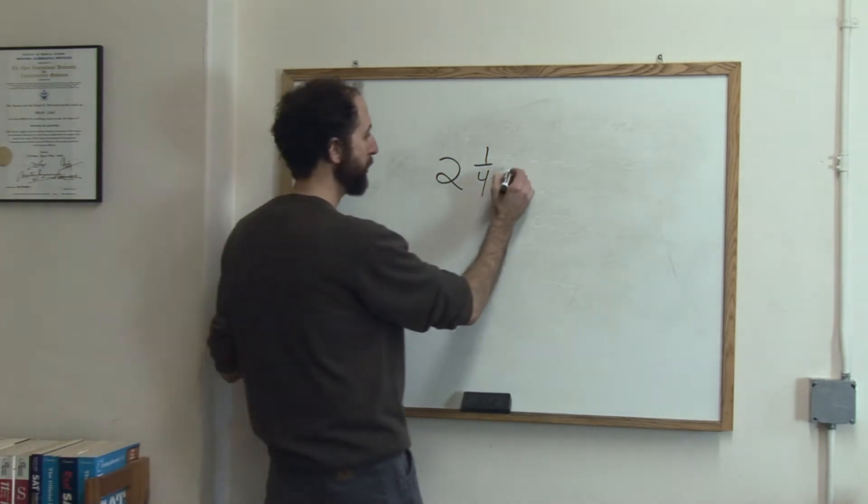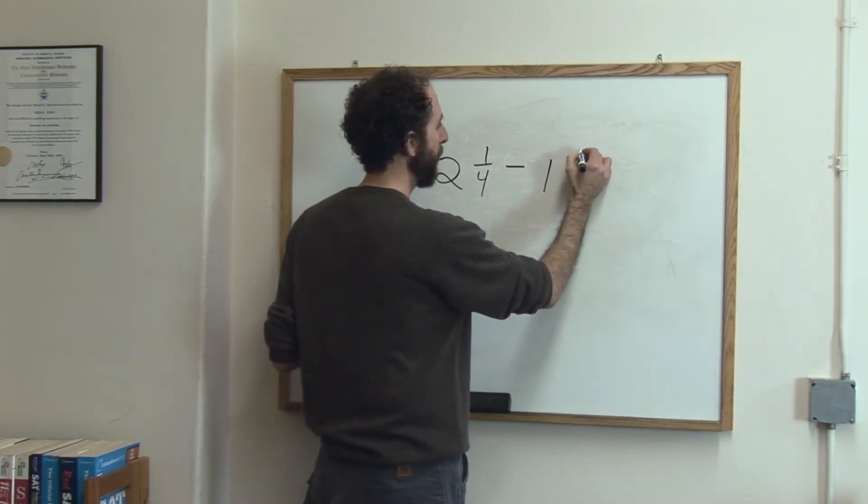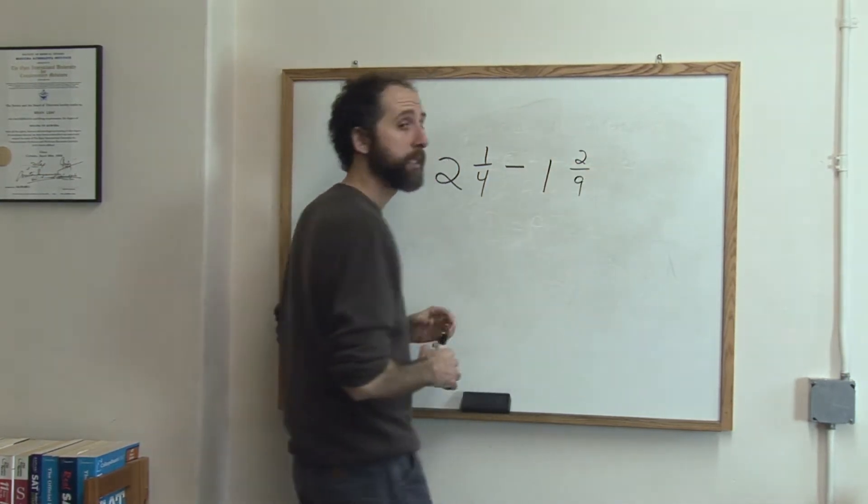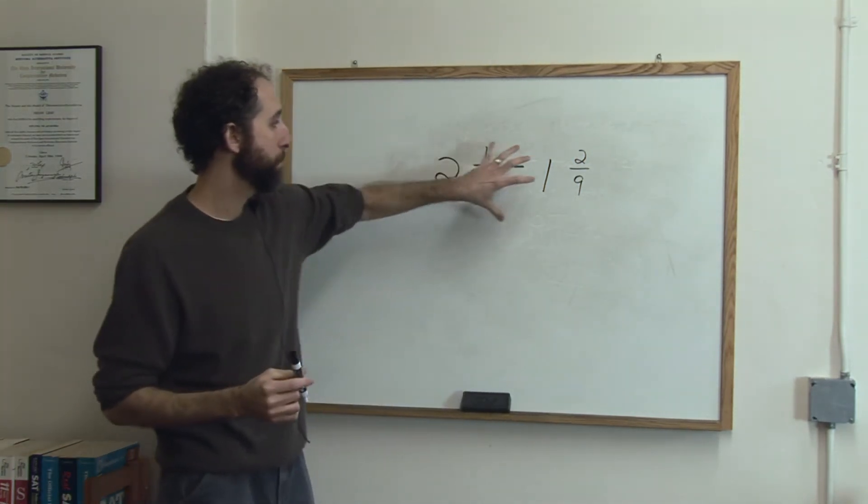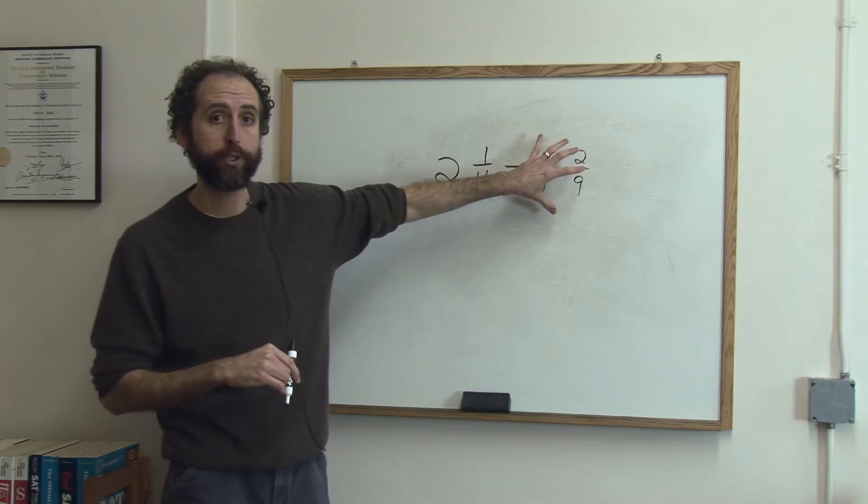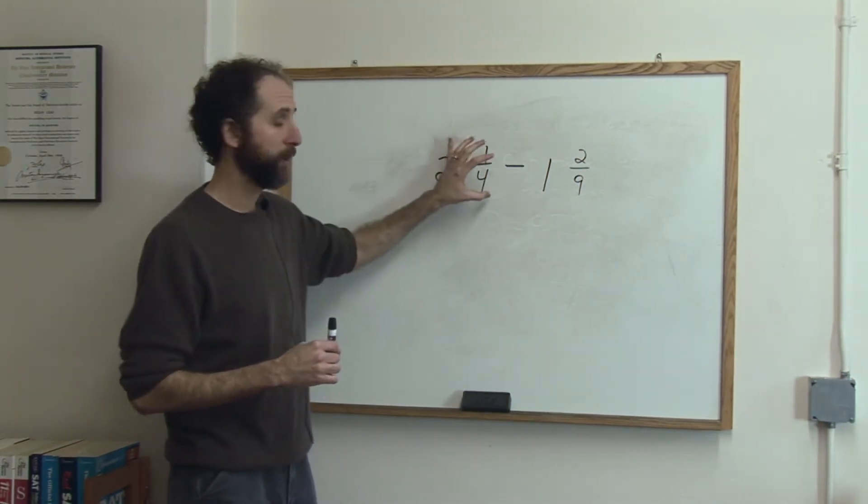So if we want to subtract 2 and a quarter minus 1 and 2 ninths, what we would do is we need to turn both of these mixed numbers, or compound fractions, we need to turn both those into improper, just meaning we need to turn the whole thing into a fraction.